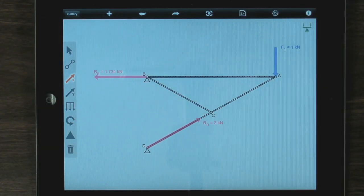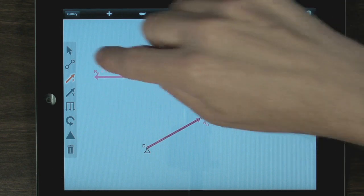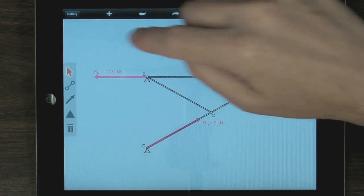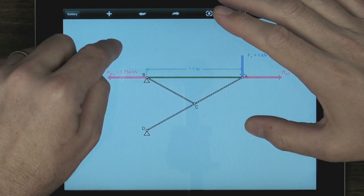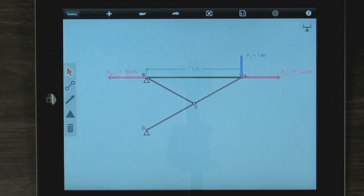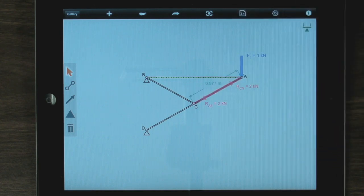It actually figured out the reaction forces for me right away. Now what else can I do with this? I can look at forces in that bar right there. 1,734 newtons. And I think that's pretty close to what I got. If there's any errors here, it's just round off error.